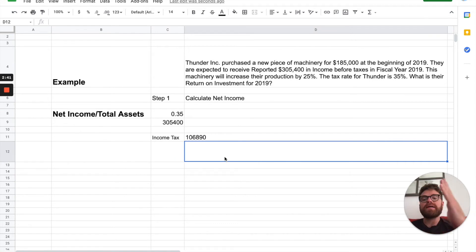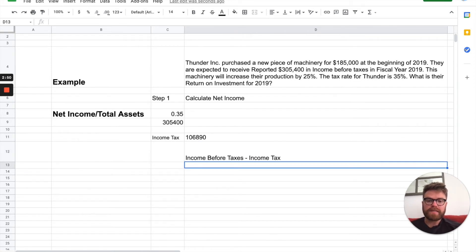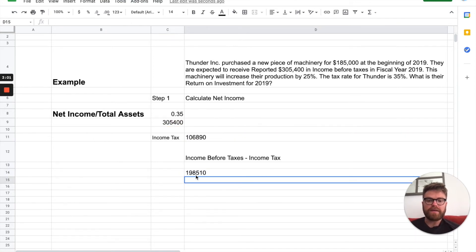Now, we need to get net income. To do that, we take our income before taxes, and we subtract our income tax. That's it. So, $305,400 minus $106,890. That right there is our net income.